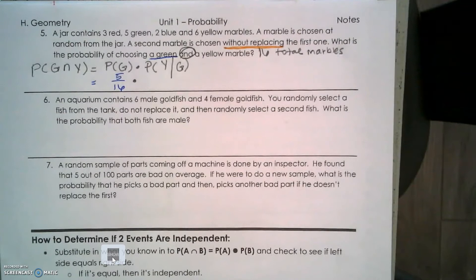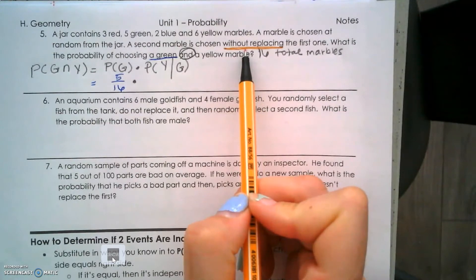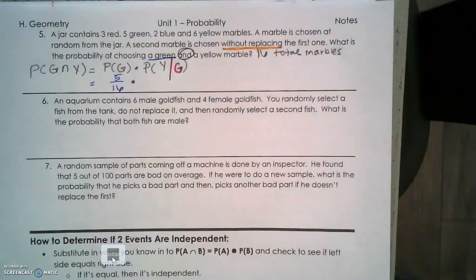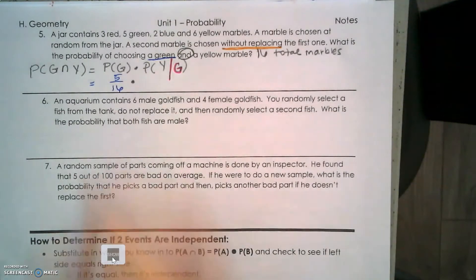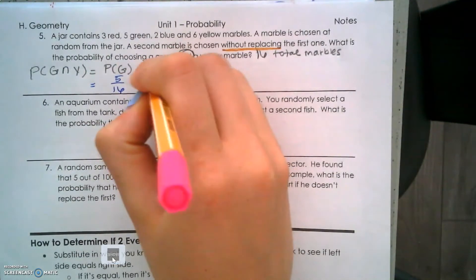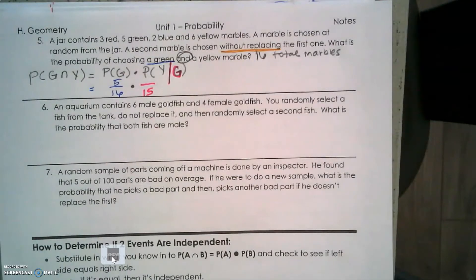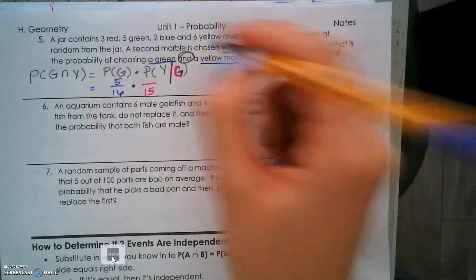Now for the probability of yellow - without replacing clues us in we're talking about dependent events, so given green happened. I chose a green; if I don't put that green marble back in my jar, my new total is 15 marbles. I picked a green and kept it, so now there's 15 marbles, and how many are yellow? Still 6.